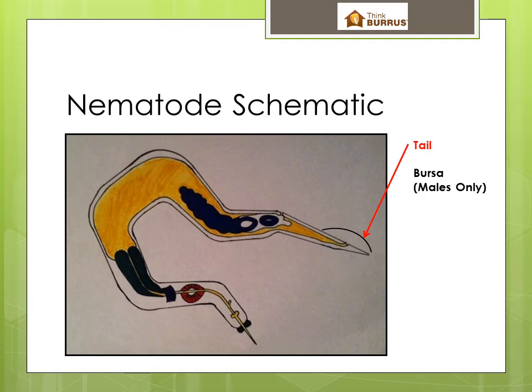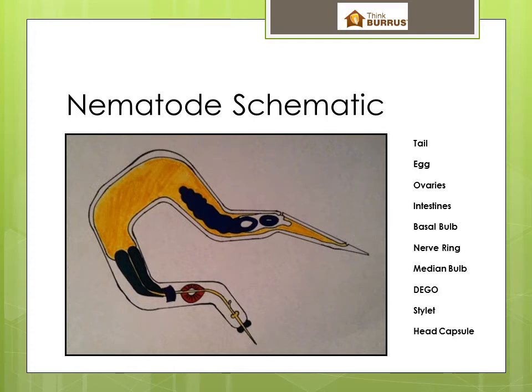Nematode anatomy also becomes important for differentiating the sexes. Occasionally, a nematode will have two small flaps located on the tail end called a bursa — I drew it in with a computer — and only males have it. Males also have structures termed spicules that are used during mating. Now that we've talked about the tail end and all those uncomfortable things associated with it, let's move on.